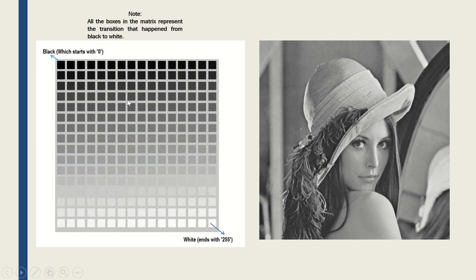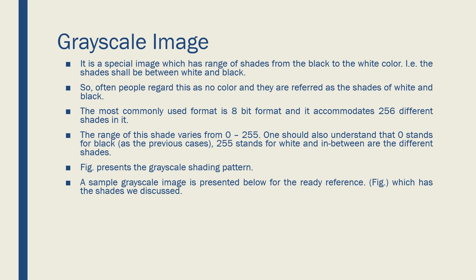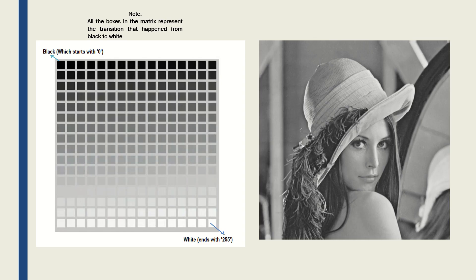I am going to show you an example now. This is the matrix we are talking about. All the boxes have shades of black or white. The pure black starts with 0, it keeps increasing, and you can see the dominance of white coming in, ending with 255. This is called the grayscale image. All these are referred to as shades. The shades range starts with 0 and ends with 255. Please remember: shades make a grayscale image. I have got an image here — this is a perfect grayscale image which has only the shades ranging from 0 to 255, from pure black to pure white.